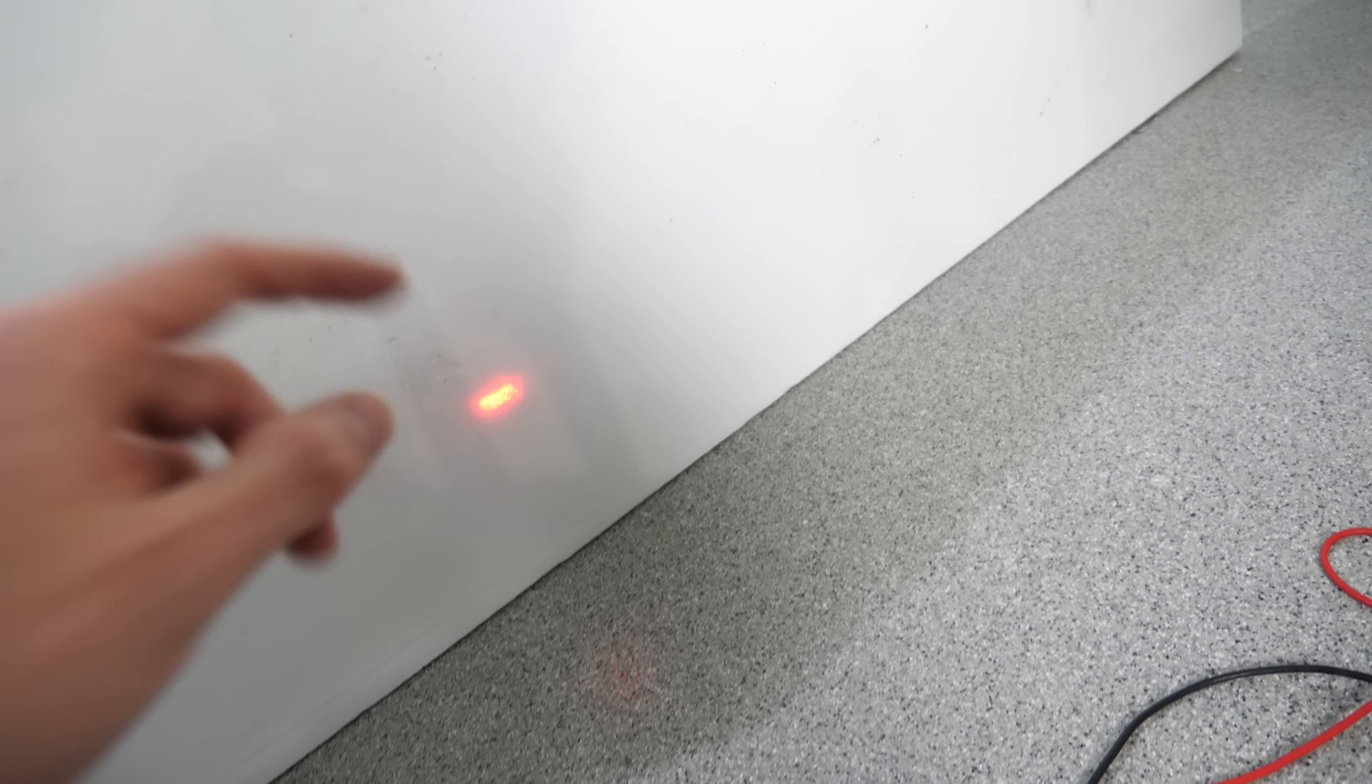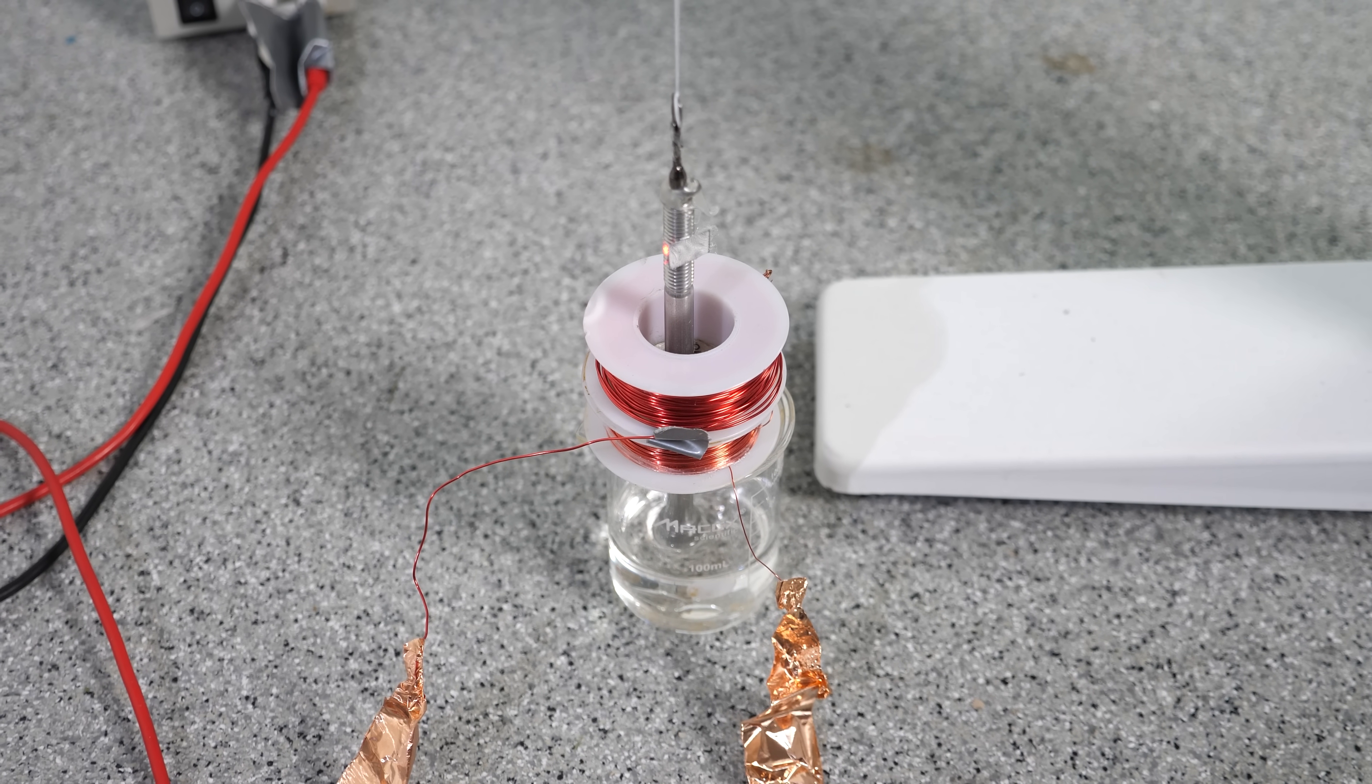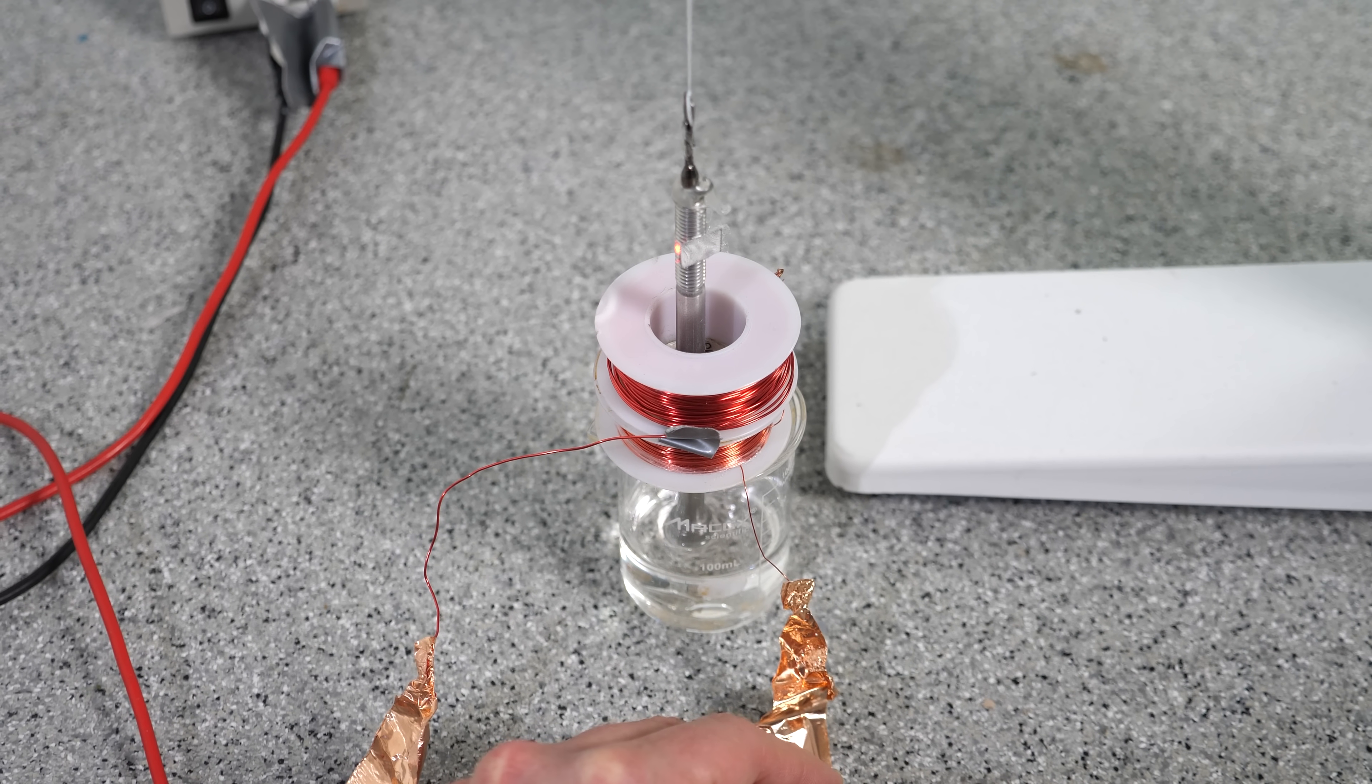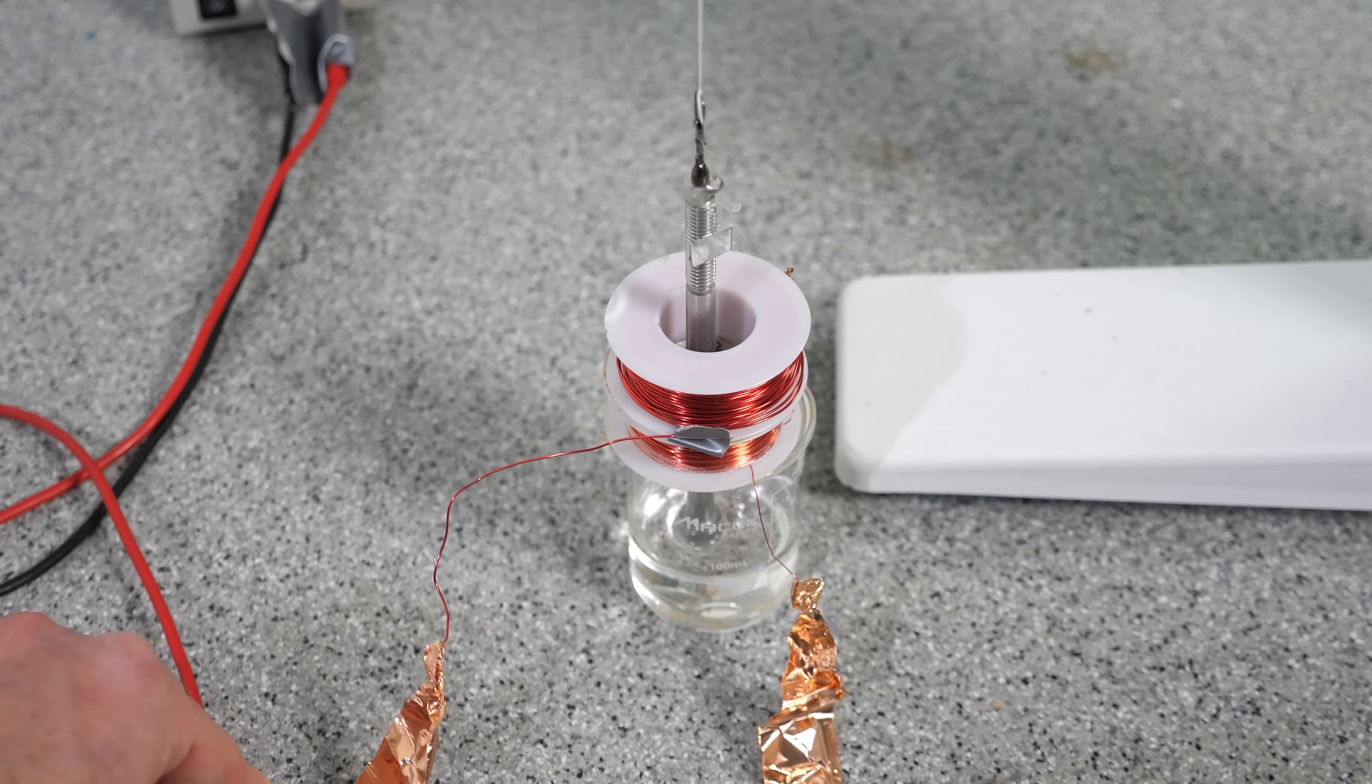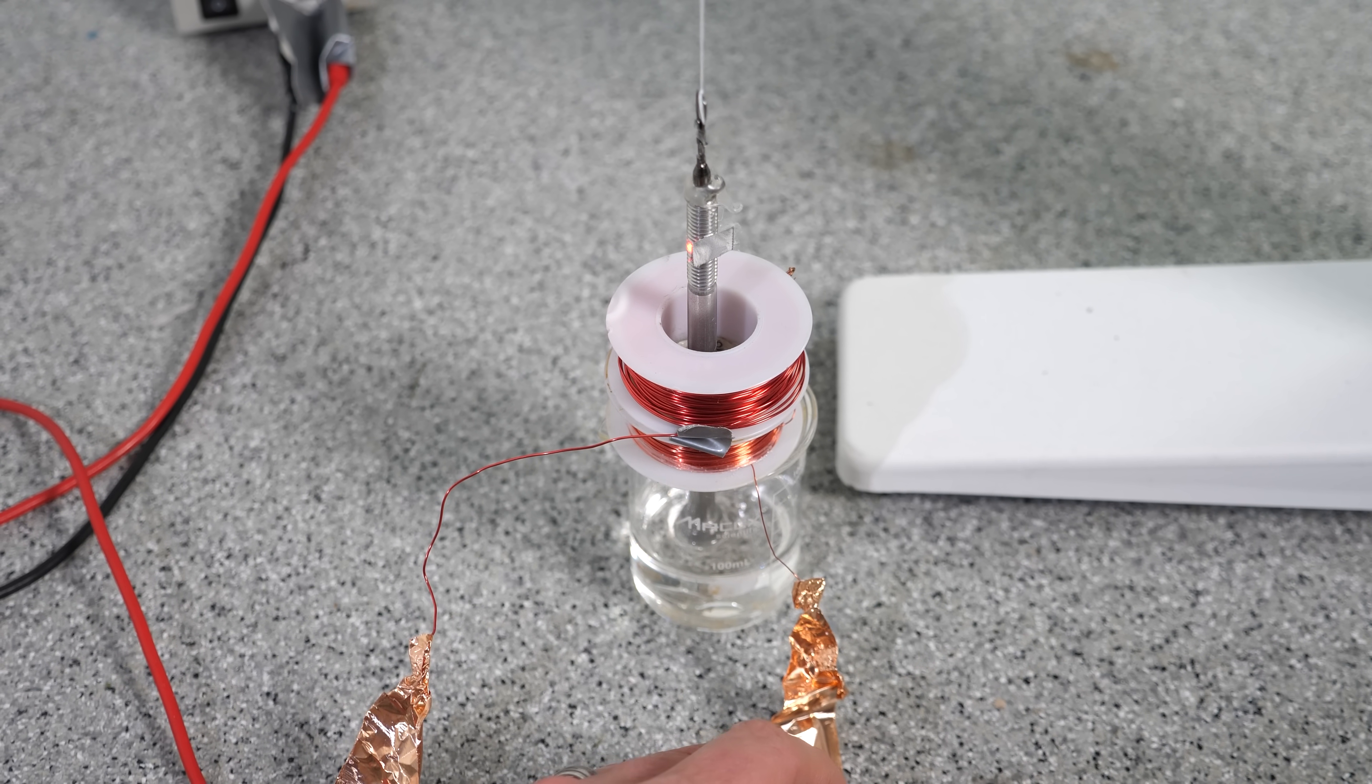Even a tiny movement of the bolt should cause the laser spot to shift. To damp any unwanted oscillations, I place some mineral oil at the bottom here. This prevents the bolt from continuously wiggling and twisting after each movement. If it's not there, it just kind of twists back and forth forever.